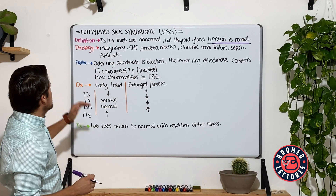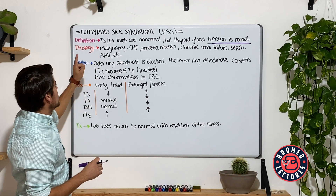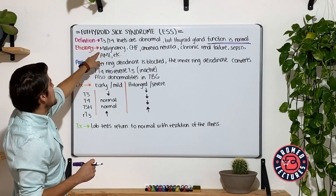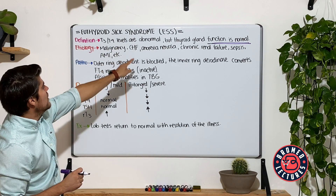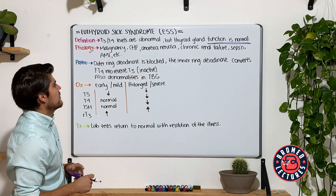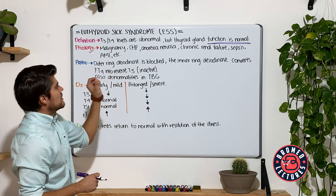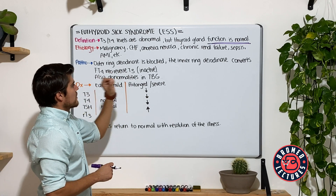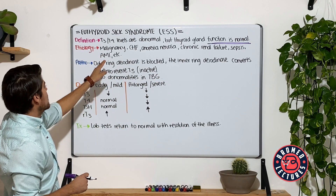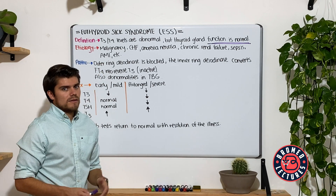For etiologies, it is usually related to chronic disease states such as malignancy, congestive heart failure, anorexia, or chronic renal failure. But acute states can also develop into this condition, which includes sepsis, acute myocardial infarction, pulmonary embolism, etc.